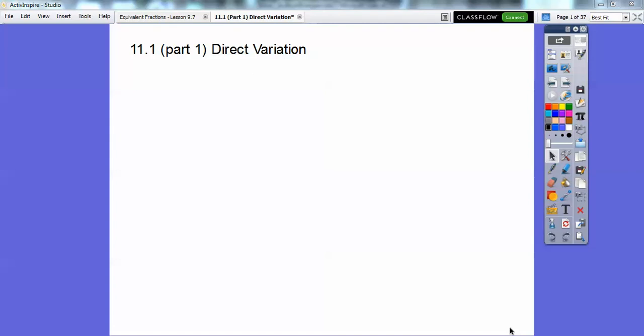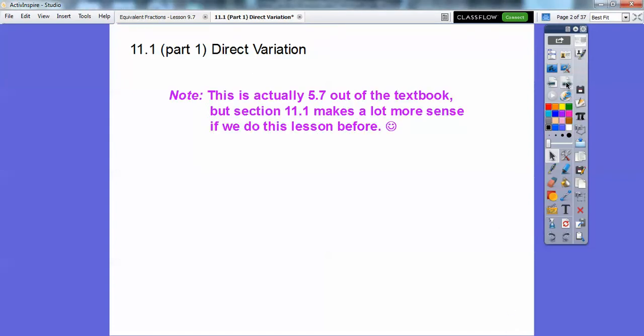Hey guys, this is section 11.1. It's called Direct Variation. Now actually, in our textbook, this is the only textbook I've seen them do it separately like this. This is actually section 5.7 of the textbook that we're following. But it sure makes more sense if we do this lesson first before we dive into what's called inverse variation, which is the title of 11.1. So I call this 11.1 Part 1. It's actually section 5.7 in the book, but we'll call it 11.1 in our class here.